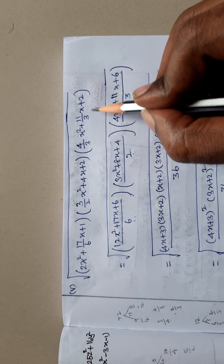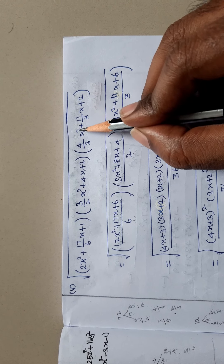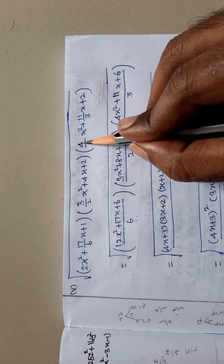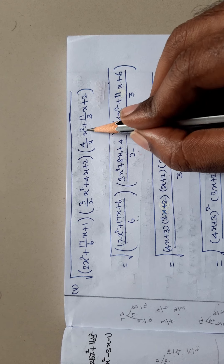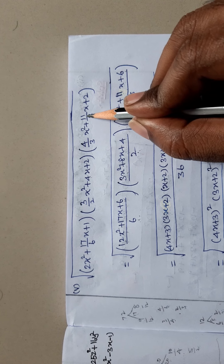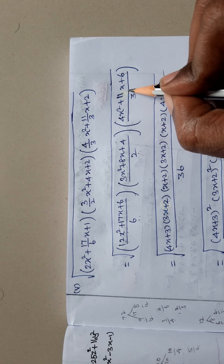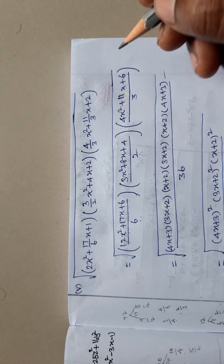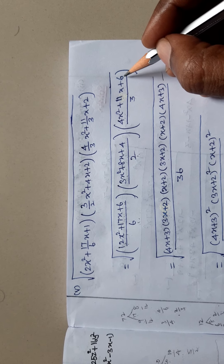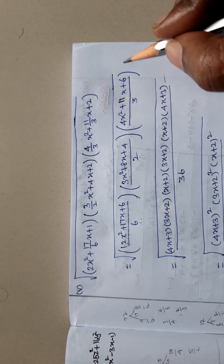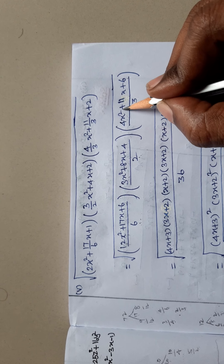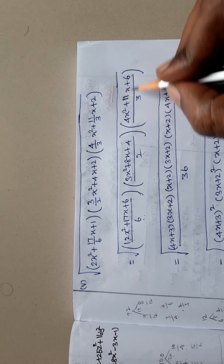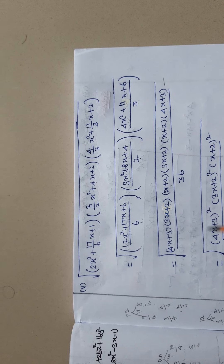Next, here also taking LCM, divided by 3. So, 4x squared as it is and 11x as it is. So, 3 into 2 gives 6 only. So we have 4x squared plus 11x plus 6, divided by 3.